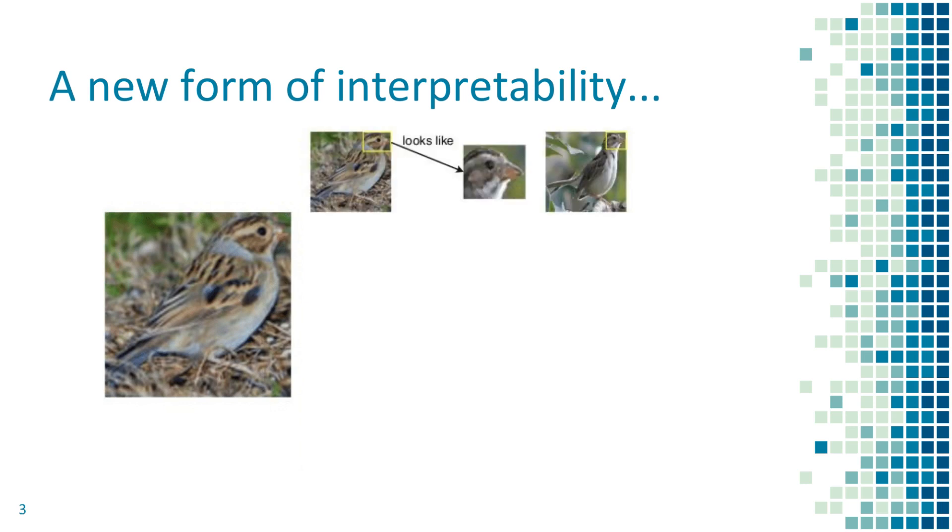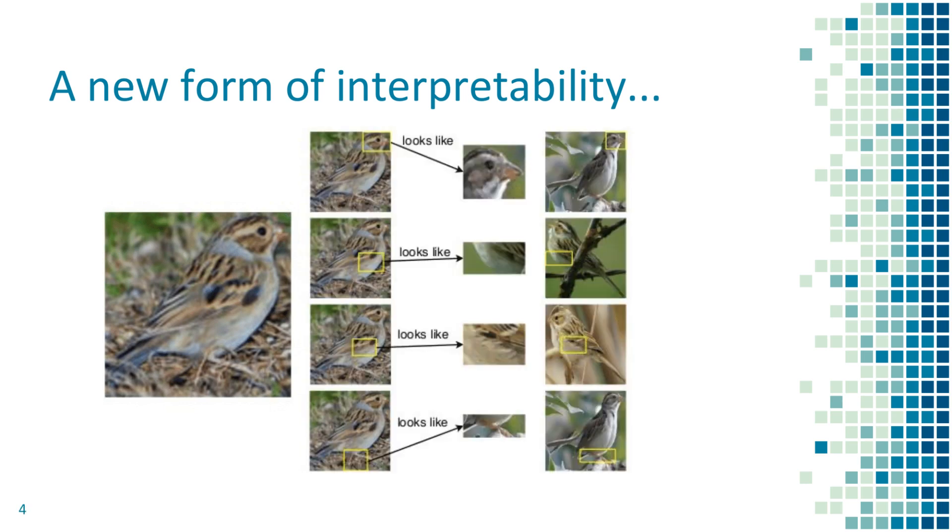Perhaps the bird's head looks like that of a prototypical sparrow, or the wing bars look like a sparrow's wing bars. When we classify images, we might focus on parts of the image and compare them with prototypical aspects of a given class by saying, this looks like that.